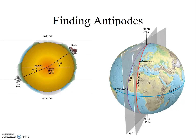Our last topic is a short one: antipodes. The term antipode has a Greek root and literally means 'opposite foot' — anti meaning opposite, pod meaning foot. In geography, an antipode is the place on Earth that is on the exact opposite side of the Earth from your location. A rather silly way to think of it is that it's the place you would end up if you dug straight down through the Earth. For example, the antipode of the North Pole is the South Pole.